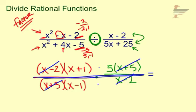On the top, we have a 5 left over. We're going to write that out front with the x + 1. And then over, we were left with just that x - 1. And there's our final answer.